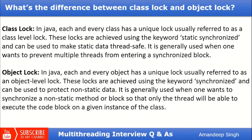The next question is: what is the difference between a class lock and an object lock? In Java, every class has a unique lock referred to as a class-level lock. These locks are achieved using the keyword static synchronized, and they are used to make static data thread-safe. On the other hand, every object also has a unique lock, referred to as an object lock, achieved using the synchronized keyword. Object locks are used to protect non-static data, whereas class locks are used to protect static data.